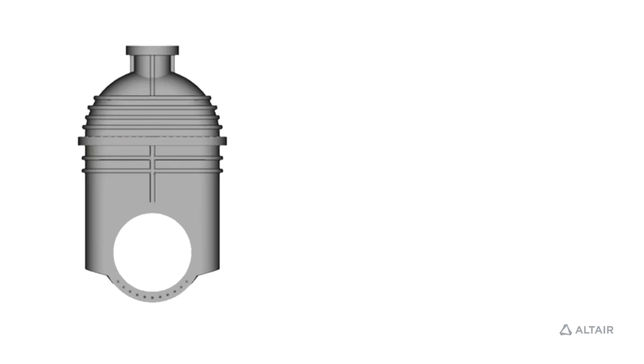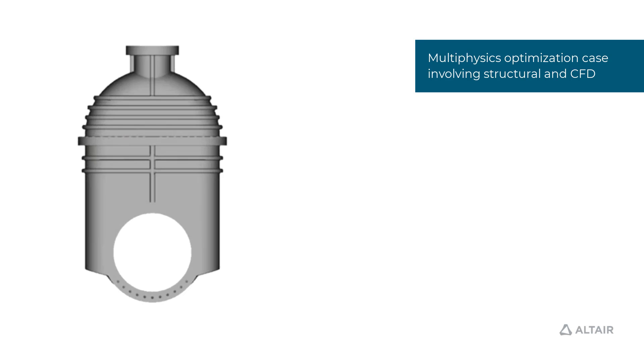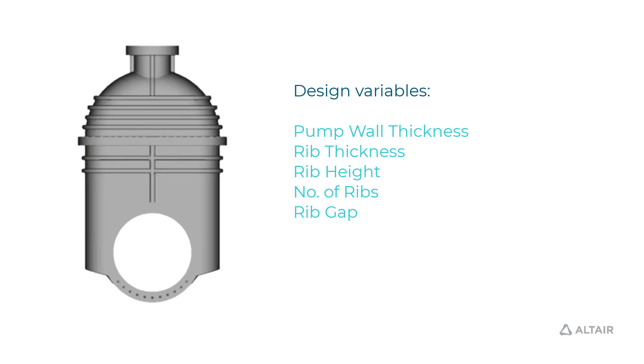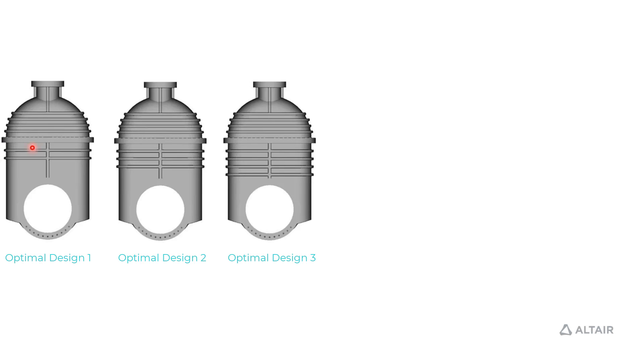What we had is a multiphysics optimization scenario for a hydropump involving structural and CFD domain. The design variables that we incorporated were pump wall thickness, rib thickness, rib height, number of ribs, and the spacing of ribs.